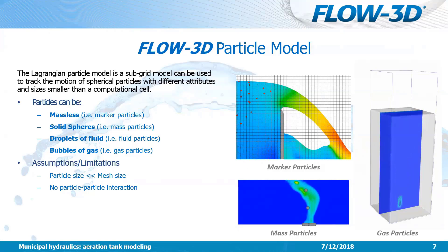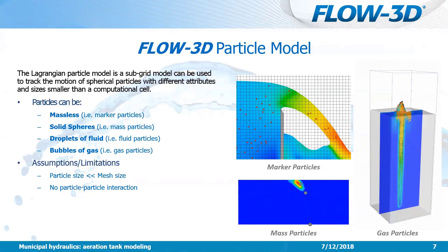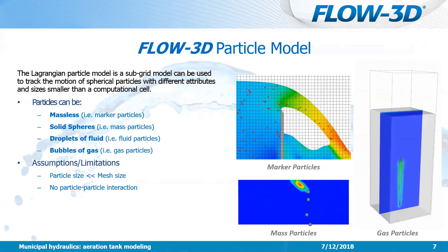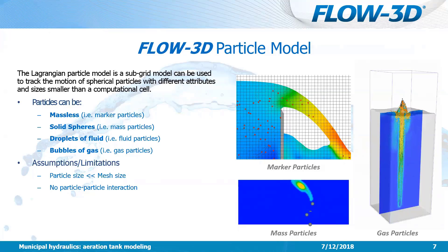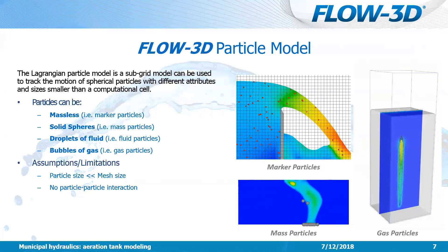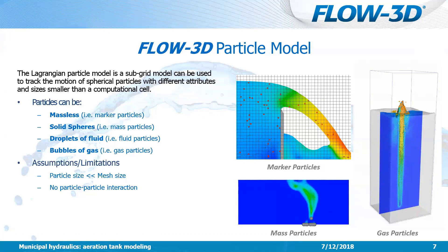Let's do a quick review of the different particle types available in Flow3D. The first type is a marker particle — these are massless particles whose motion is defined directly by the fluid velocity field, used for flow visualization purposes. Next, we have mass particles, where we can assign a density and diameter. With those properties defined, we calculate the force of gravity and drag on the particle to track its motion within the mesh. These can be used for tracking things like sediment or other types of solid particles.